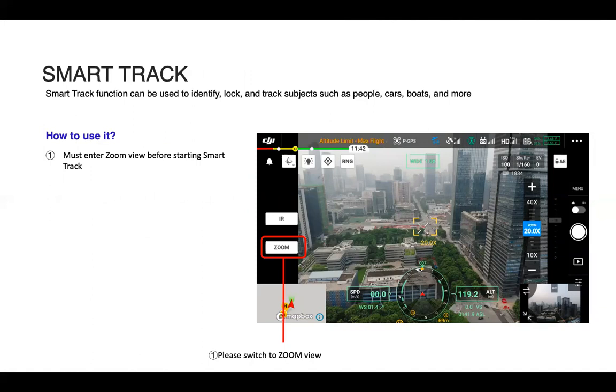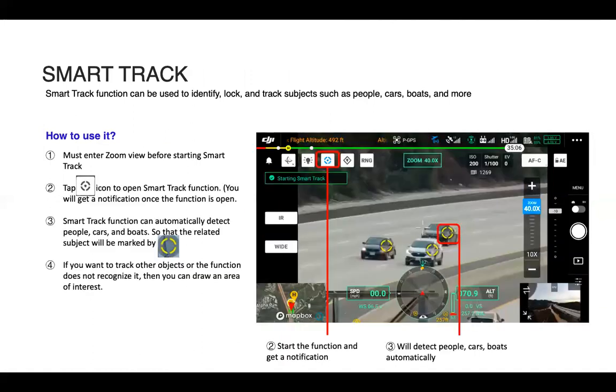Moving into the SmartTrack side of things. You're going to need to enter the zoom view before starting SmartTrack. You can click on zoom on the left side. Tap the icon, the circle with the dot in the middle, to open the SmartTrack function. You'll get a notification starting SmartTrack. SmartTrack function can automatically detect people, cars and boats. So the related subject will be marked with the yellow circle. You click on one of those yellow circles to start SmartTracking. If you want to track an object that's not automatically recognized, you can tap, hold and draw a rectangle around a set object.